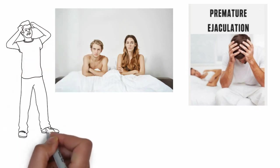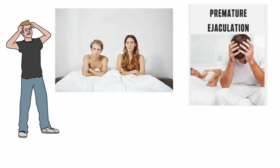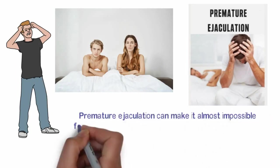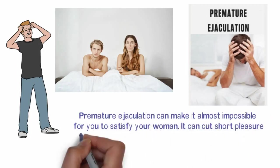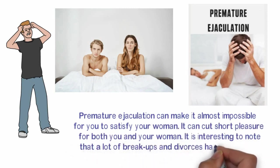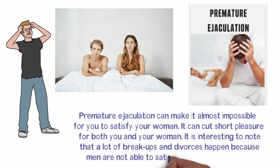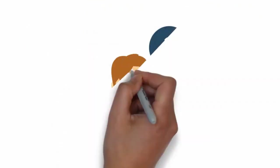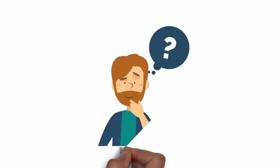Premature ejaculation is a problem that affects almost every man at some point in his life. It can make it almost impossible for you to satisfy your woman and can cut short pleasure for both partners. It is interesting to note that a lot of breakups and divorces happen because men are not able to satisfy their women sexually. Do you want to know how to last long in bed? Here are the proven tactics and secrets to overcome any premature ejaculation problem that you may have to help you last longer in bed.